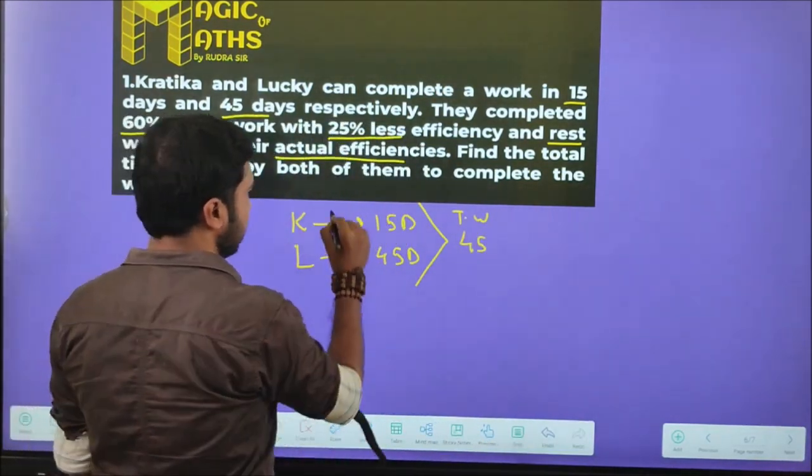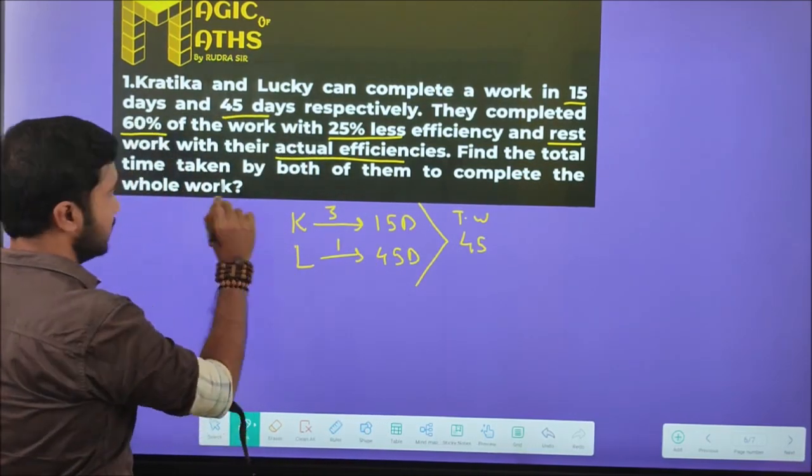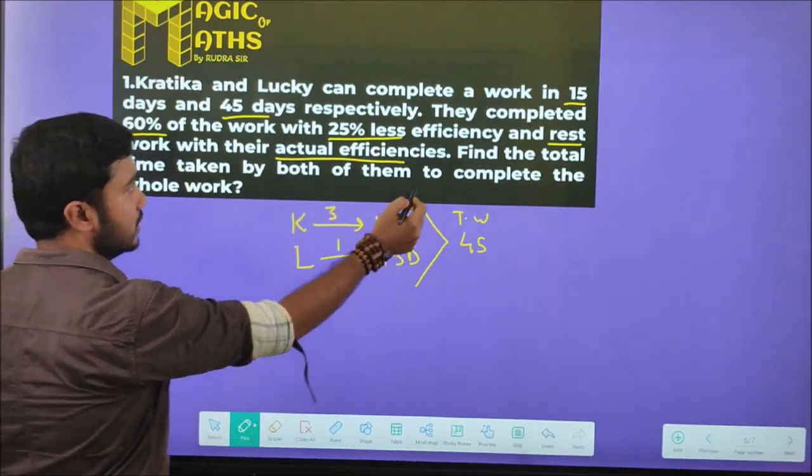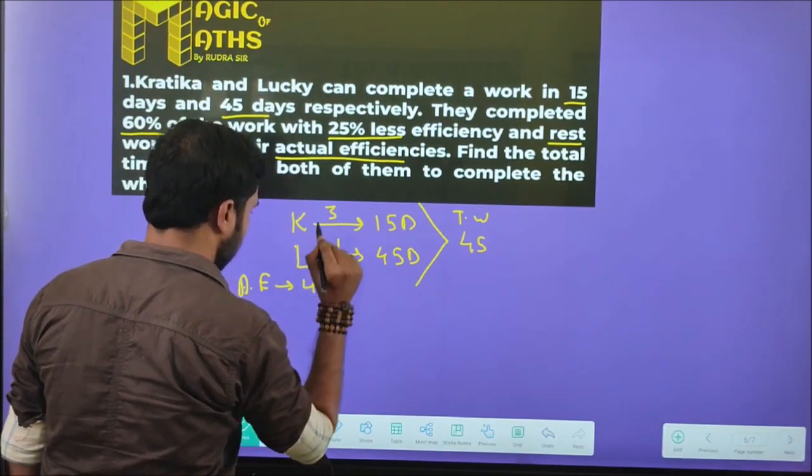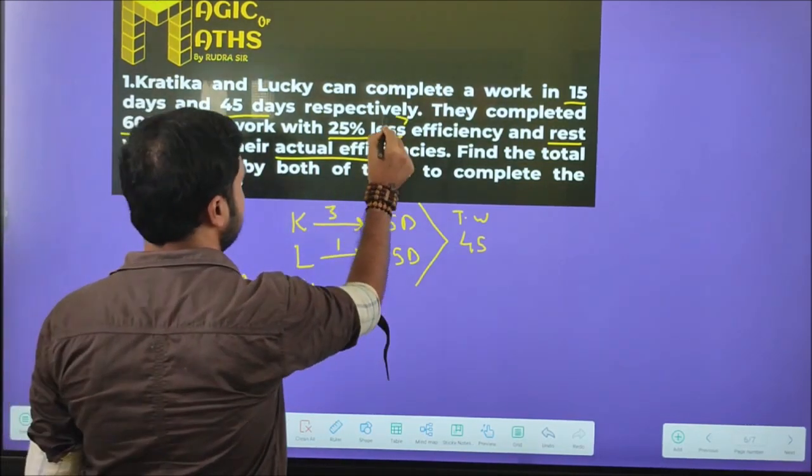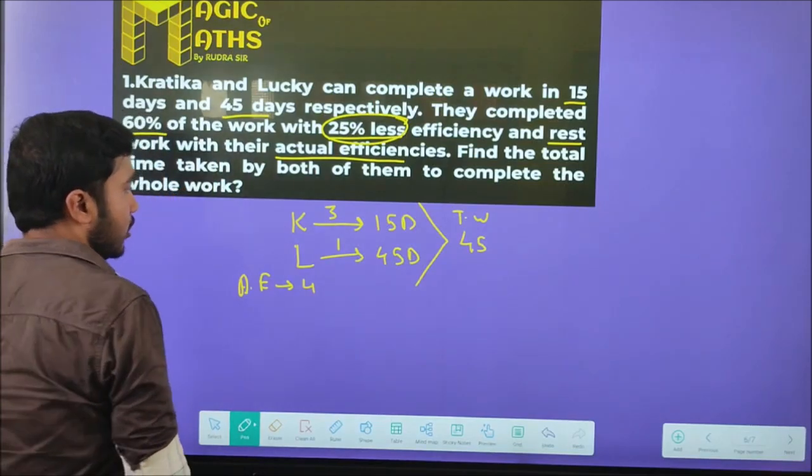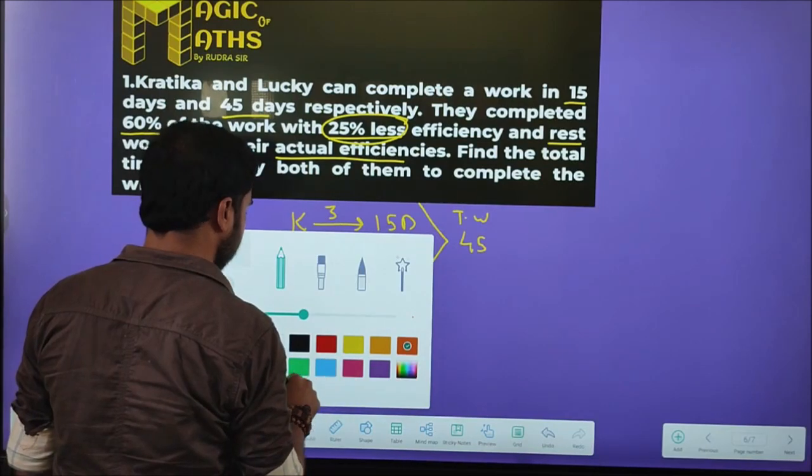Efficiency will be 3 and 1. This is the actual efficiency, so total efficiency is 3 plus 1 equals 4. Now we look at 60% of the work at 25% less efficiency.